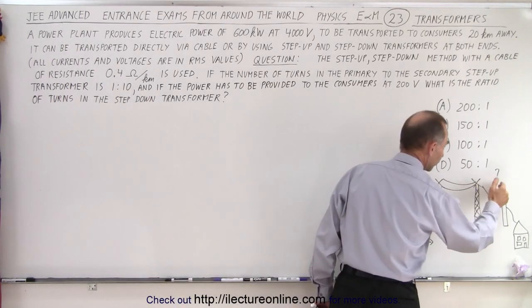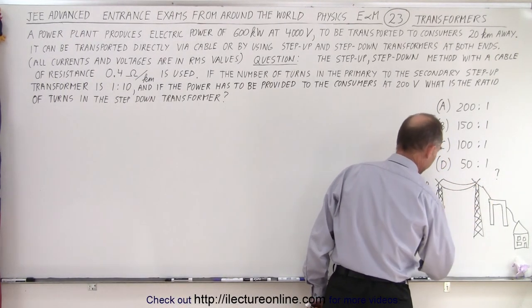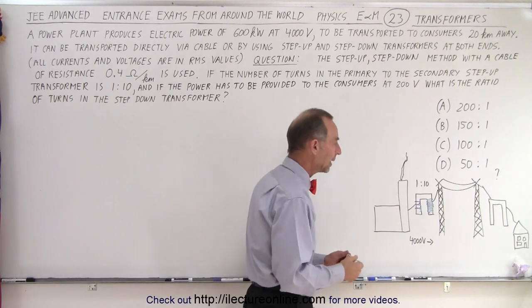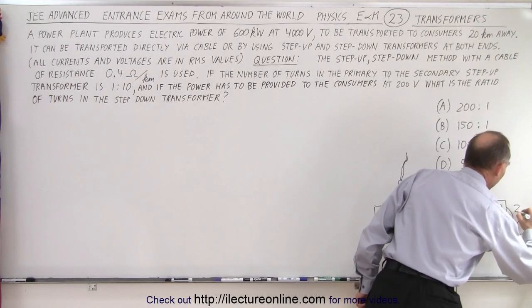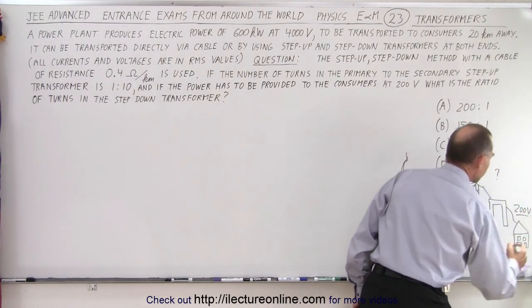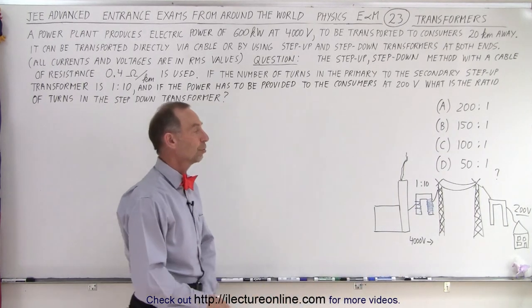So what is the ratio of turns in the step-down transformer if we use this as a step-up and at the end we want to have 200 volts going to the consumer?